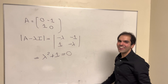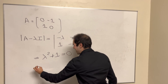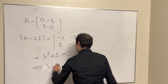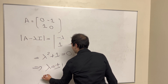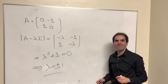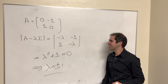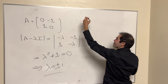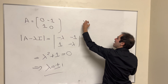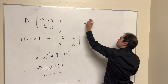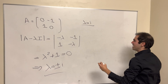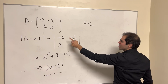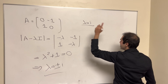And oh no, the eigenvalues are imaginary — which doesn't scare us. Now let's calculate the eigenvectors corresponding to λ = i, so this is the null space of A minus iI.